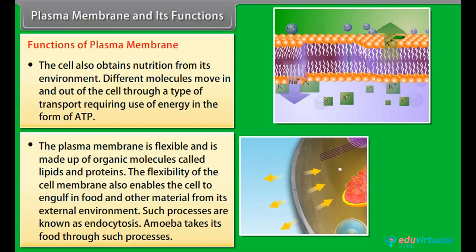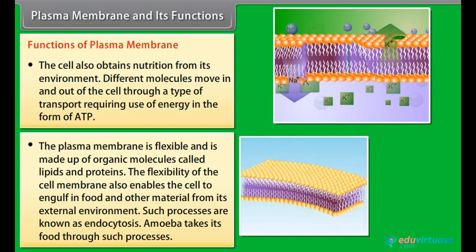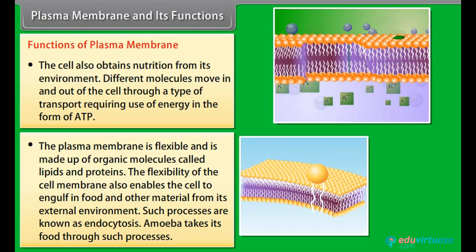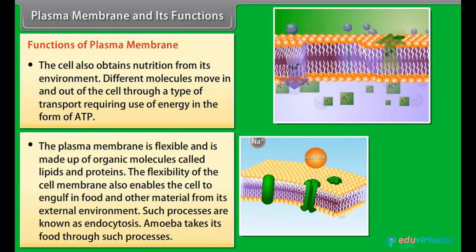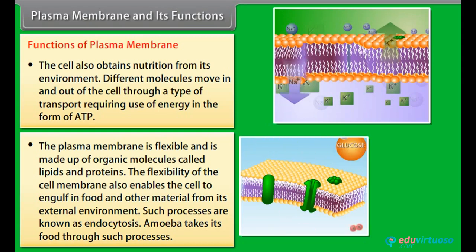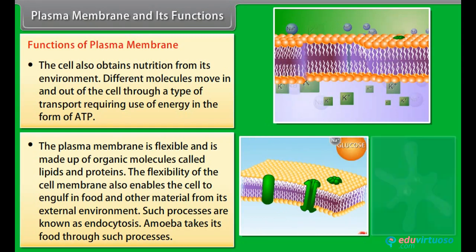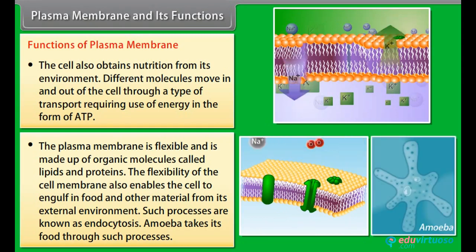The plasma membrane is flexible and is made up of organic molecules called lipids and proteins. The flexibility of the cell membrane enables the cell to engulf food and other materials from its external environment. Such processes are known as endocytosis. Amoeba takes its food through such processes.